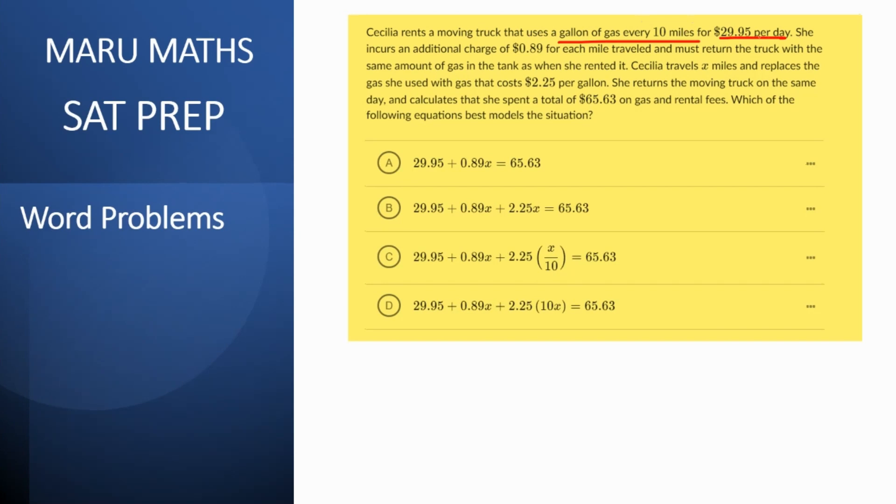So you have 29.95 dollars per day as the rental car charges and for every mile that she's traveling she has to pay 0.89. So your base is 29.95 plus 0.89 times x considering x is the number of miles she's traveled. Now in addition to this she has to fill up the gas tank to the amount of gas that she used so that it is at the same level. Otherwise you're charged with an extra fee typically.